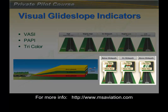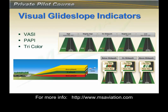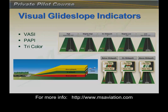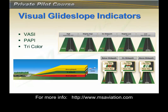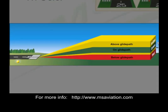There is also a two-bar VASI, probably the most widely used system. Below glide path is shown by two red bars; on glide path is red over white; and too low is red over red. Tricolor VASIs are used at some airports but are not very common. The tricolor VASI has three colors: yellow means above glide path, green means on glide path, amber means getting low, and red means too low.